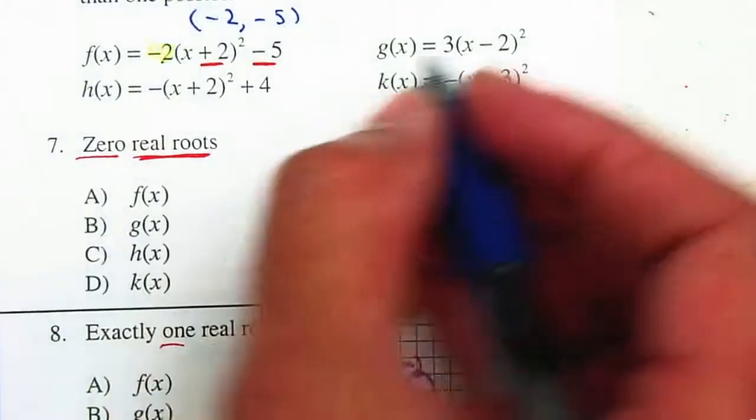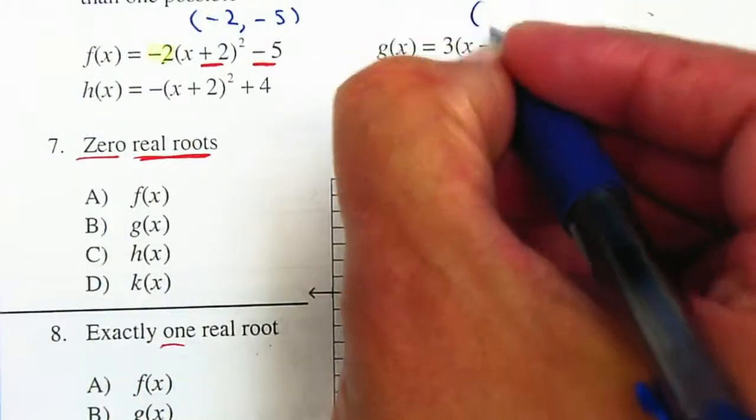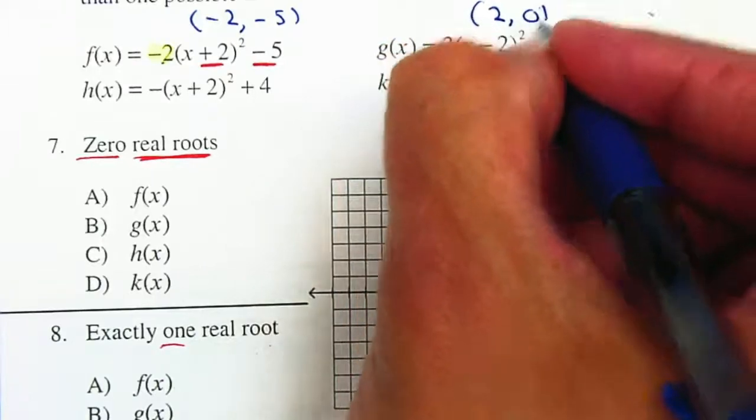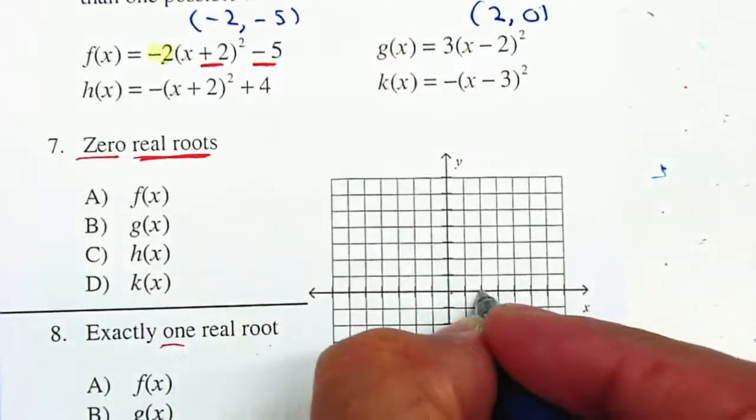Now let's continue with g of x. G of x, the vertex, h is the opposite, so it'll be positive 2. And there's no k, so it'll be 0. 2 to the right, and we must stay there.